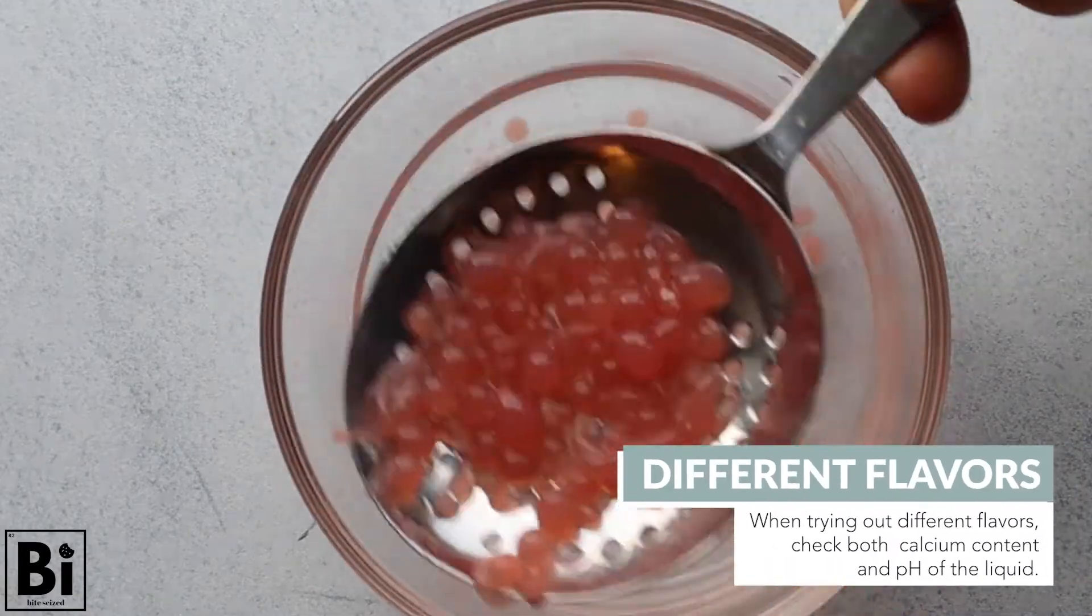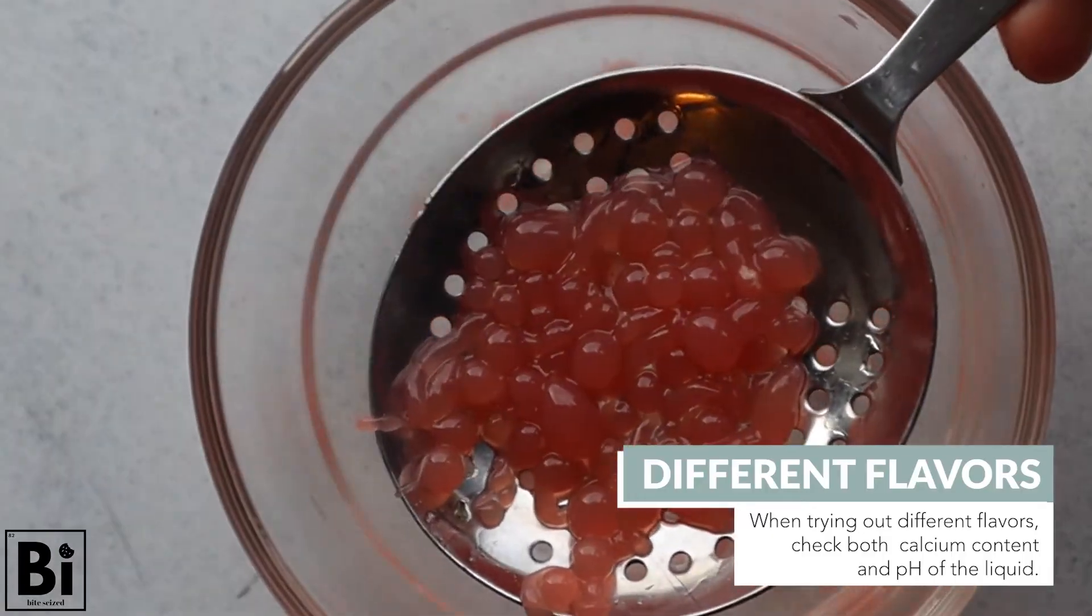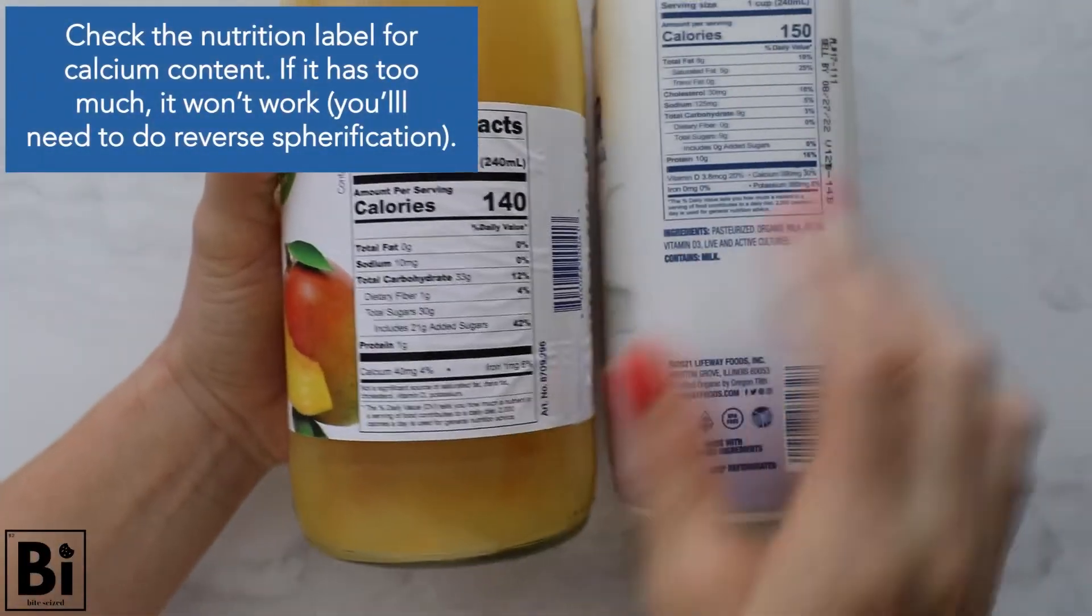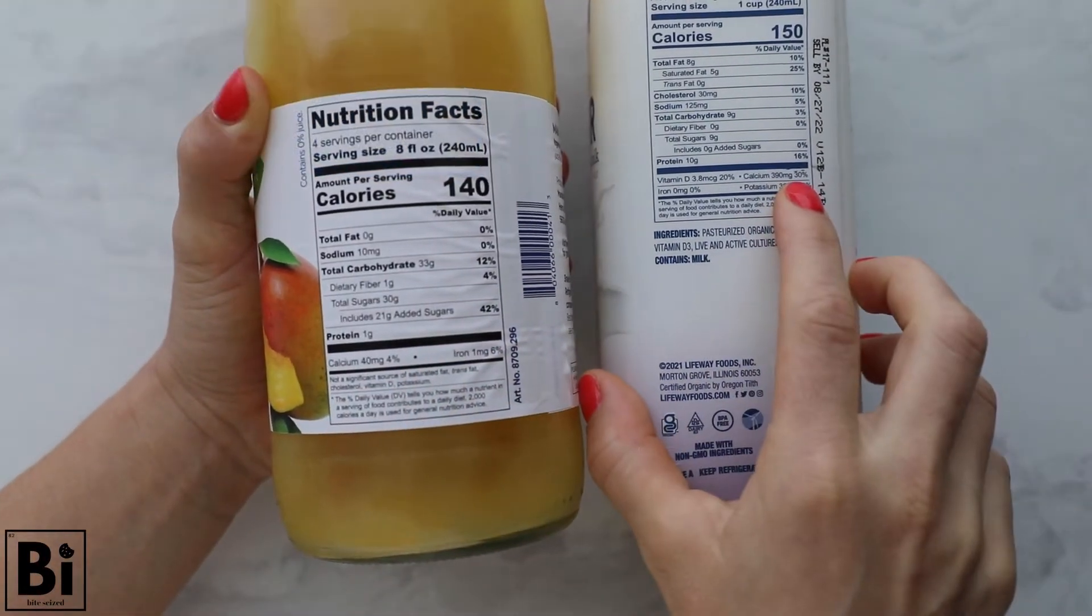You can also try out different flavors by using different liquids. Be sure to check both the calcium content of the liquid as well as the pH. A high calcium content will interfere with the reaction and you'll have to do reverse purification. We won't be covering that in this video.